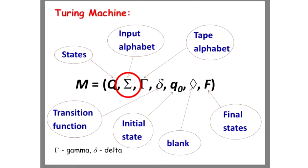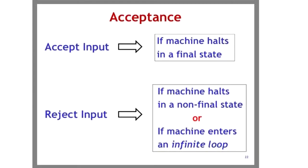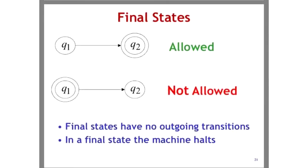The 7 tuples are: States, Input alphabet, Tape alphabet, Transition function, Initial state, Blank symbol, and the Final state. A Turing machine can only accept inputs or reject inputs. It accepts input if the machine halts in the final state. It will reject input if the machine halts in a non-final state or it enters an infinite loop. In the final states, it must not have any outgoing transitions, and the machine must halt at the final states.